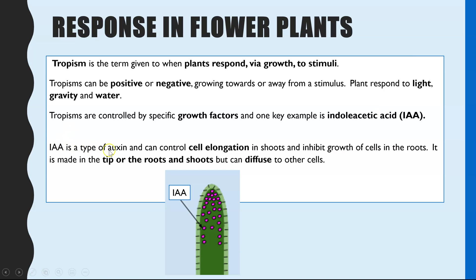IAA is a type of auxin, which is a type of growth factor in plants. In the shoots, if you have high concentrations of IAA it will cause the cells to elongate. In the roots, it will inhibit the growth and elongation of the cells. IAA is made in the tip of the roots and the tip of the shoots, but it can diffuse cell to cell to move to other locations.